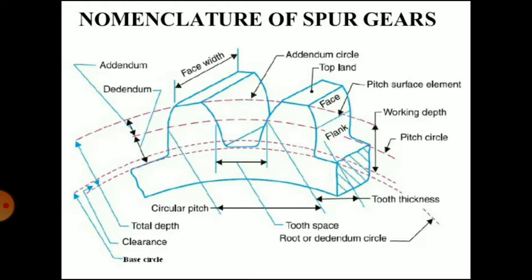Now we will see the nomenclature of spur gears — the important terms used in gear measurement. In the diagram you can see different elements of the spur gear: addendum, dedendum, face width, addendum circle, top land, face, flank, pitch surface element, depth, pitch circle, tooth thickness, circular pitch, tooth space, dedendum circle, total depth, clearance, and base circle.